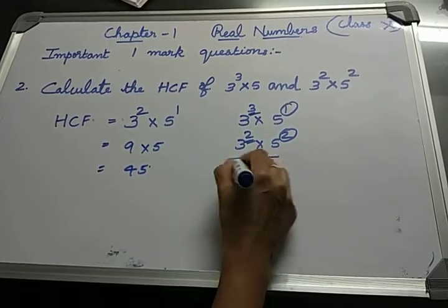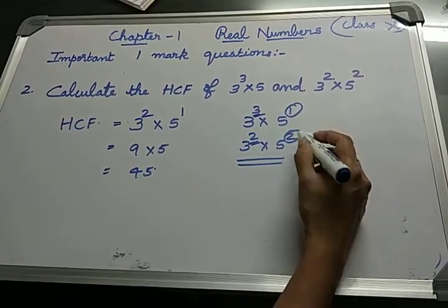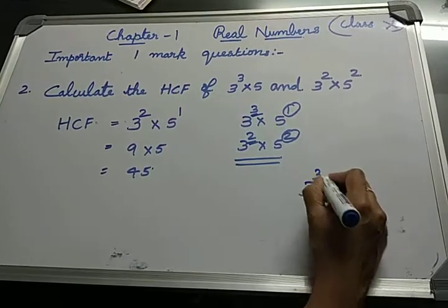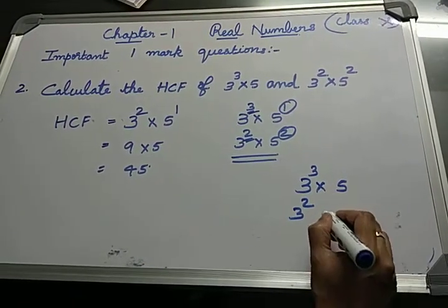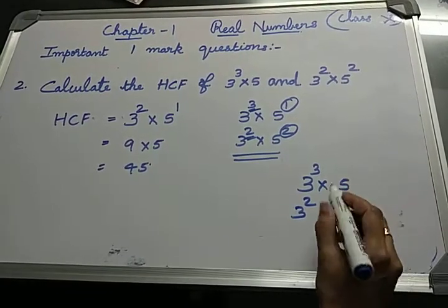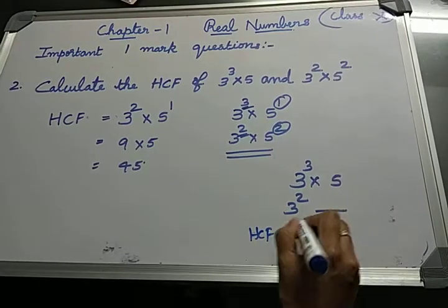When you write this, be careful that the term should be present in both terms. For example, if 5 is not present in a term, you will not write the 5. HCF will be just 3².